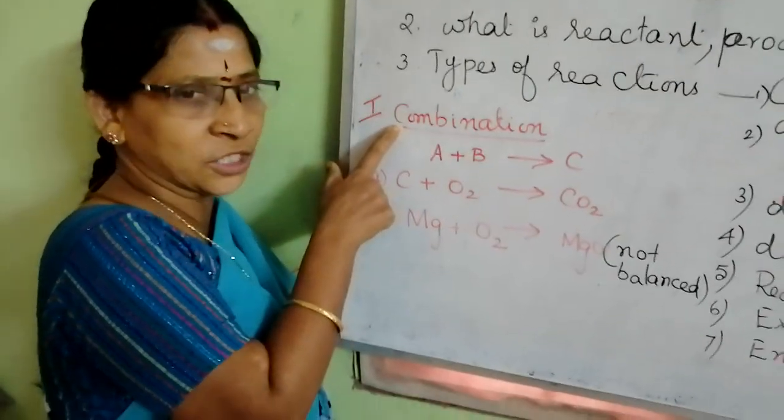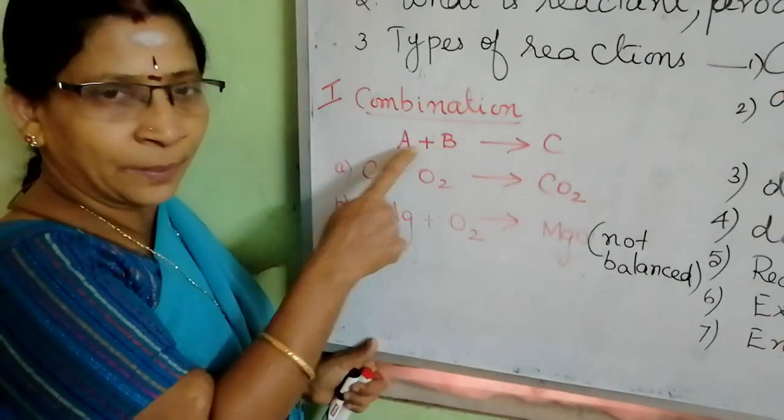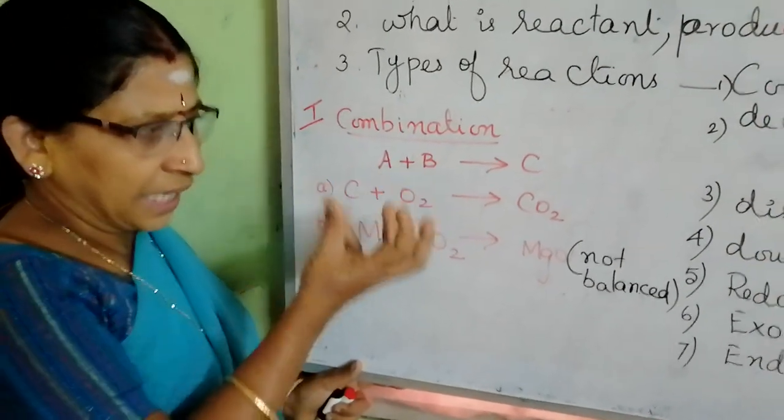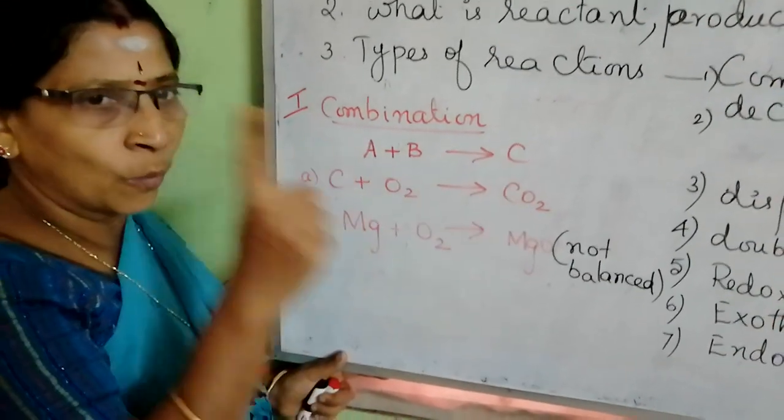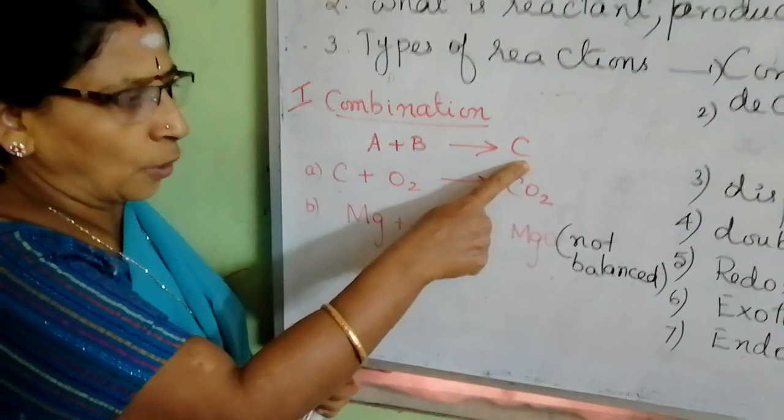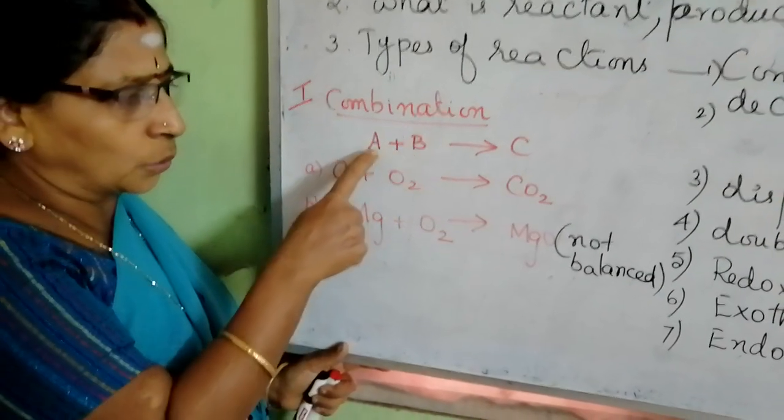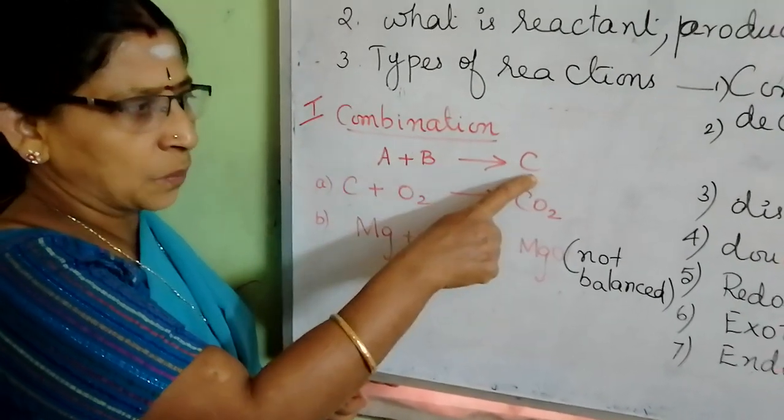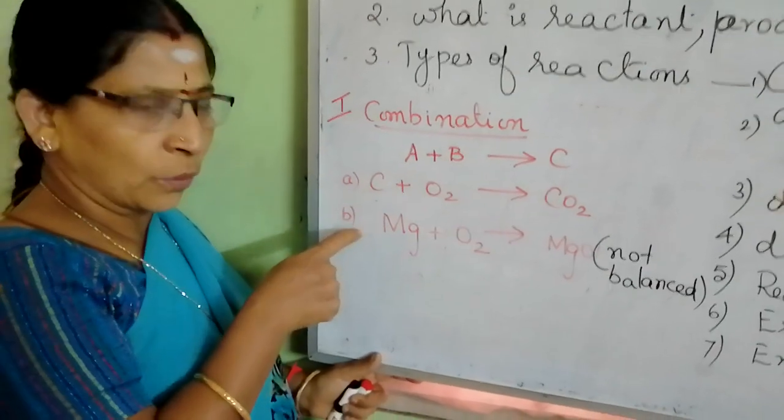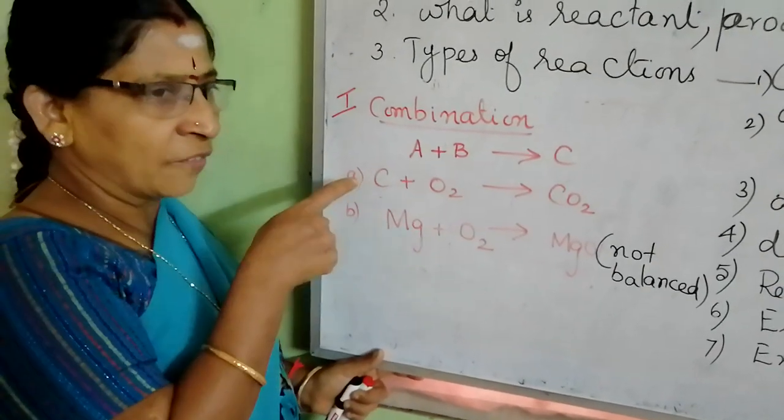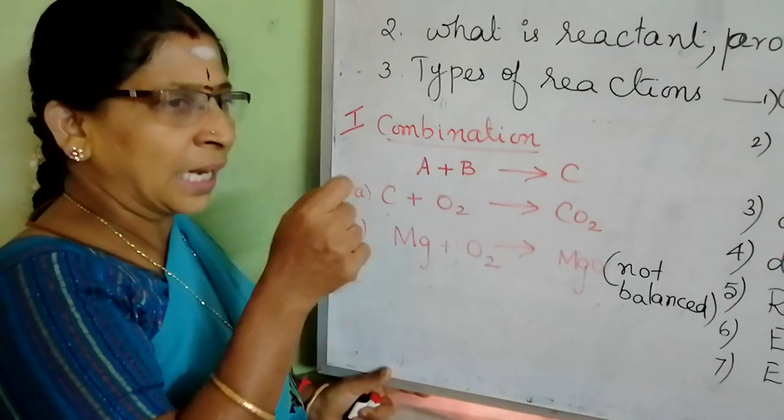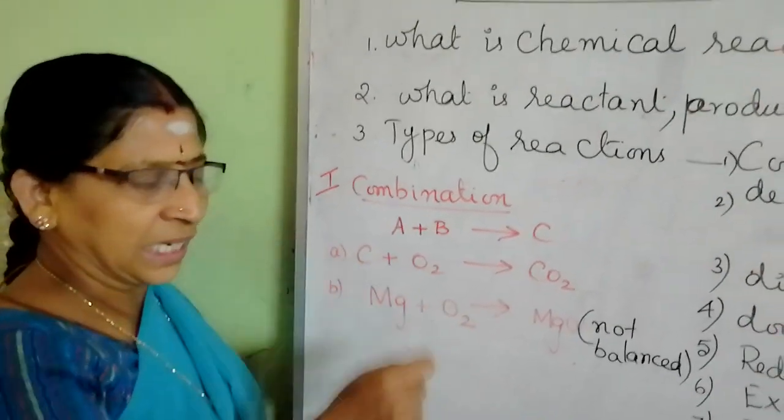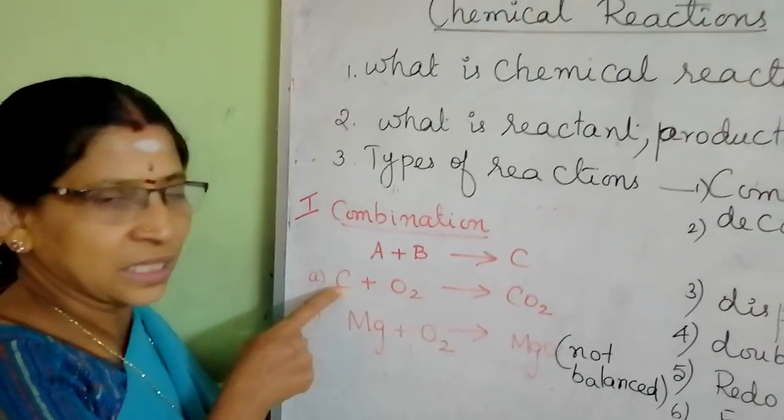Now we are going to learn one by one all these seven types of reactions in this chapter. First one is combination reaction. Two reactants, A and B are the reactants. They react together. They will form one product. C is the product. Two reactants A and B form the product C. Now we are going to see various examples and we are going to write the chemical representation. That is the scientific representation. That is called the equation.